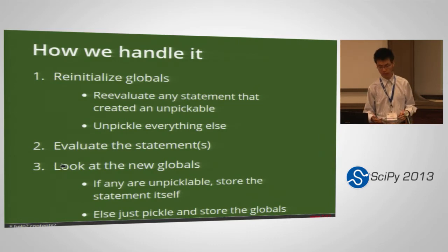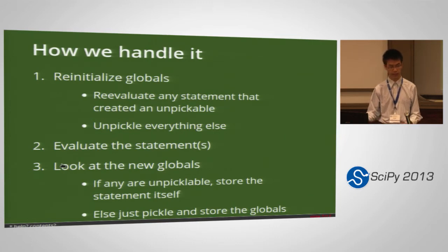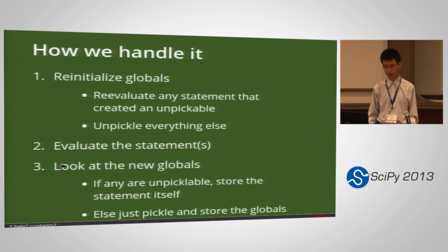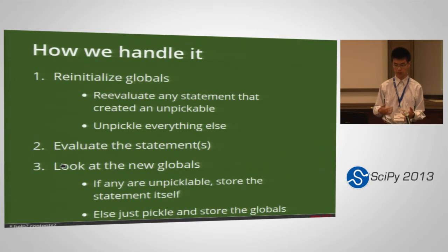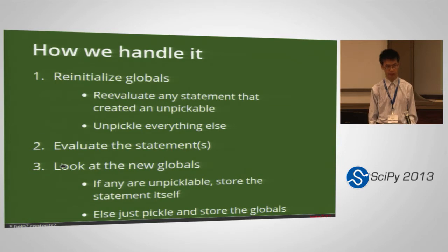The most complicated part is figuring out how to save user state. Obviously we can just use the pickle module, but that doesn't work for every object — there are some objects in SymPy you can't pickle. If you define a function in the shell, you can't pickle that. If you import a module, you can't pickle the module reference. For things that we can pickle, we pickle it. Otherwise, our workaround is to store the statement that created the unpicklable object and reevaluate that statement every time you want to evaluate a new statement.